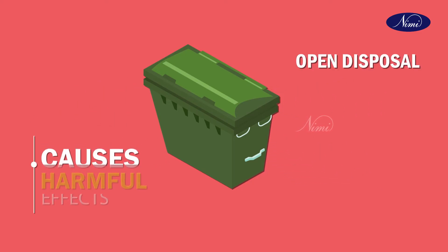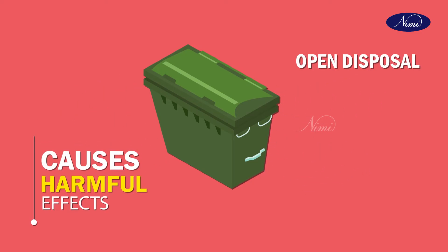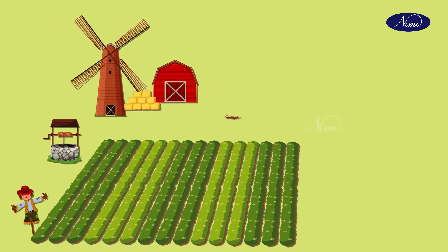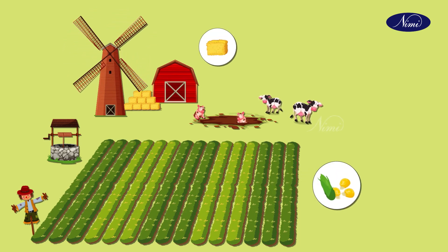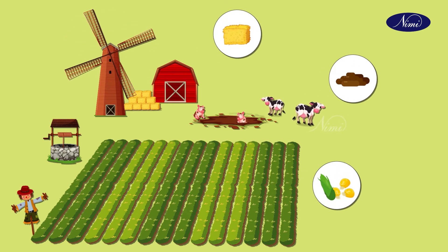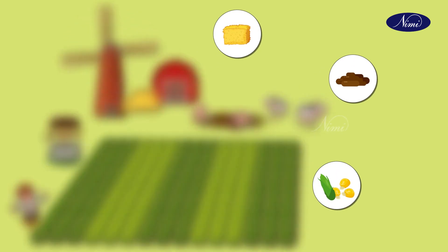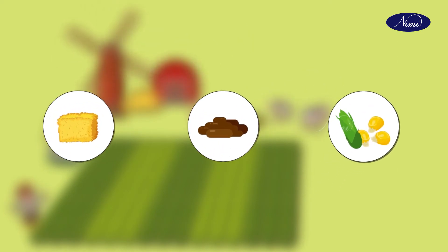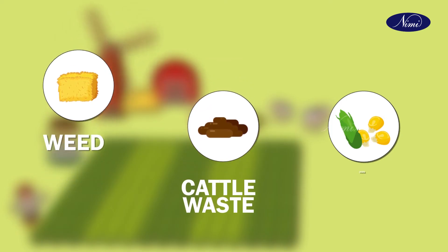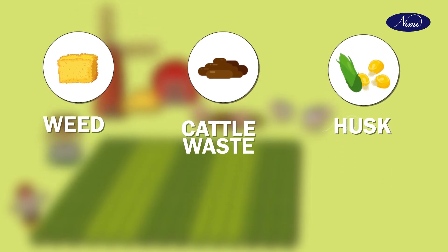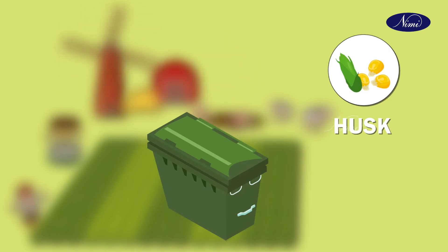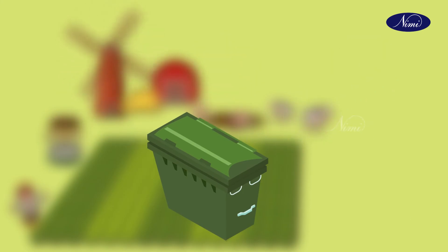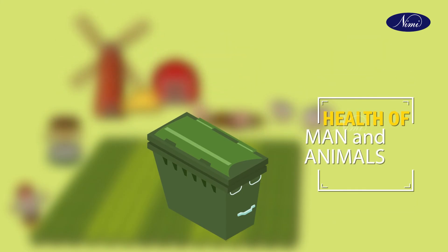Agricultural waste refers to various wastes produced in the agricultural field. It includes waste produced from crops and cattle. Examples include cattle waste, weeds, husks, etc. Open disposal of this waste creates health problems for humans and other animals.